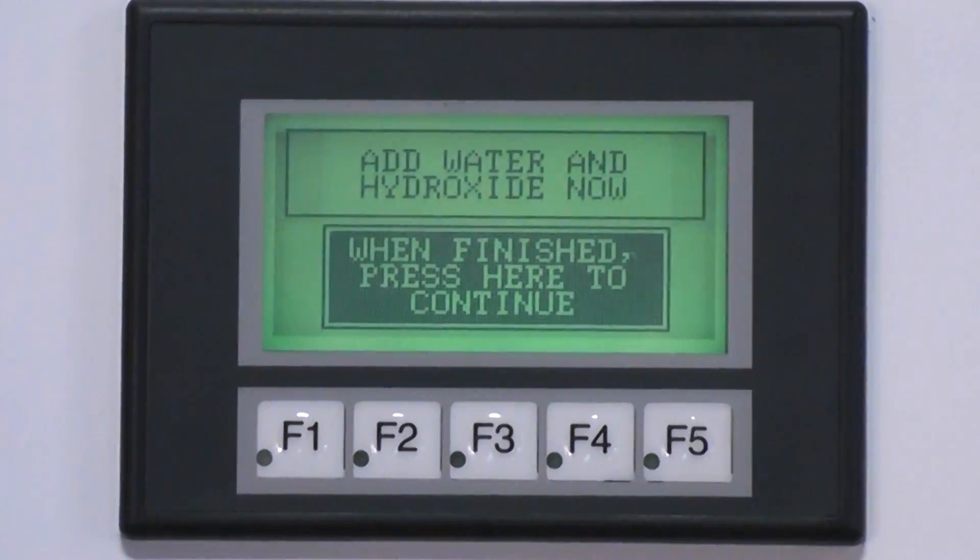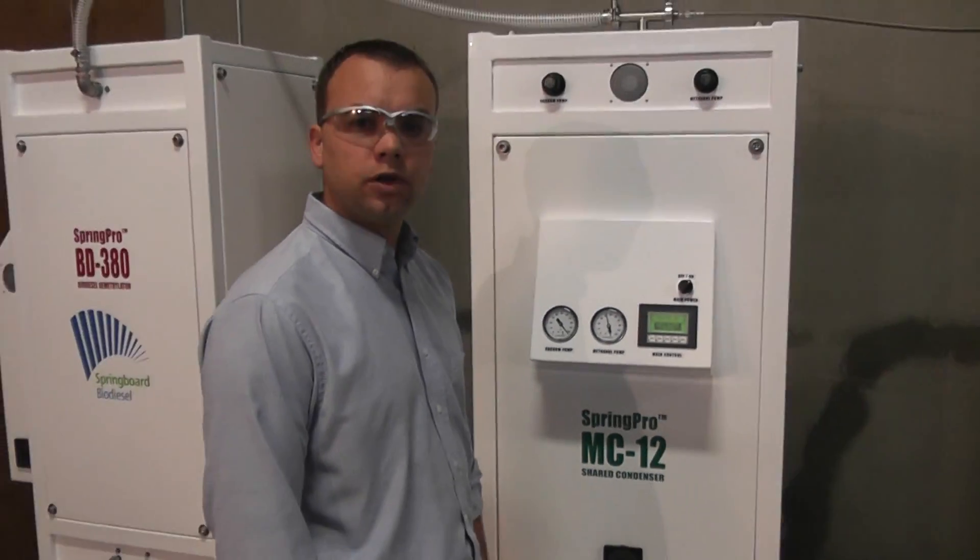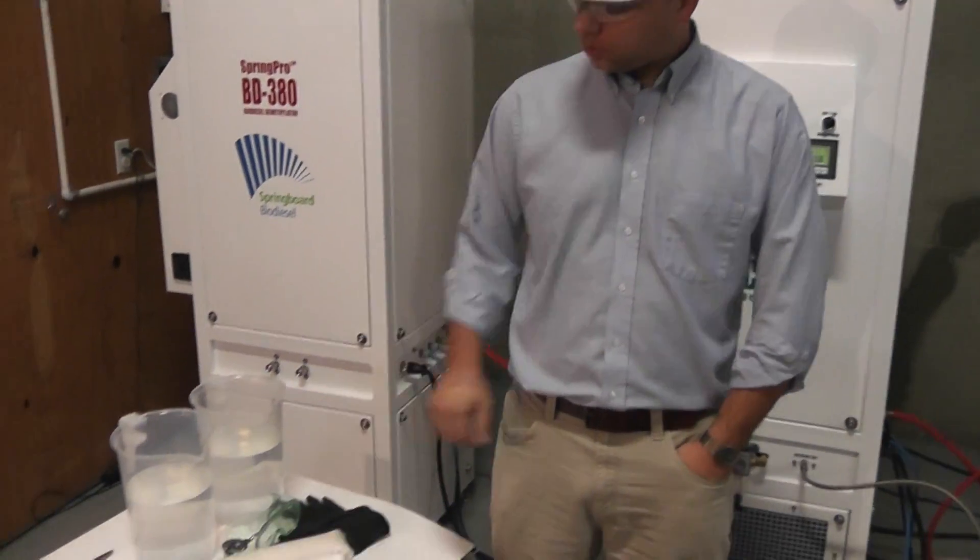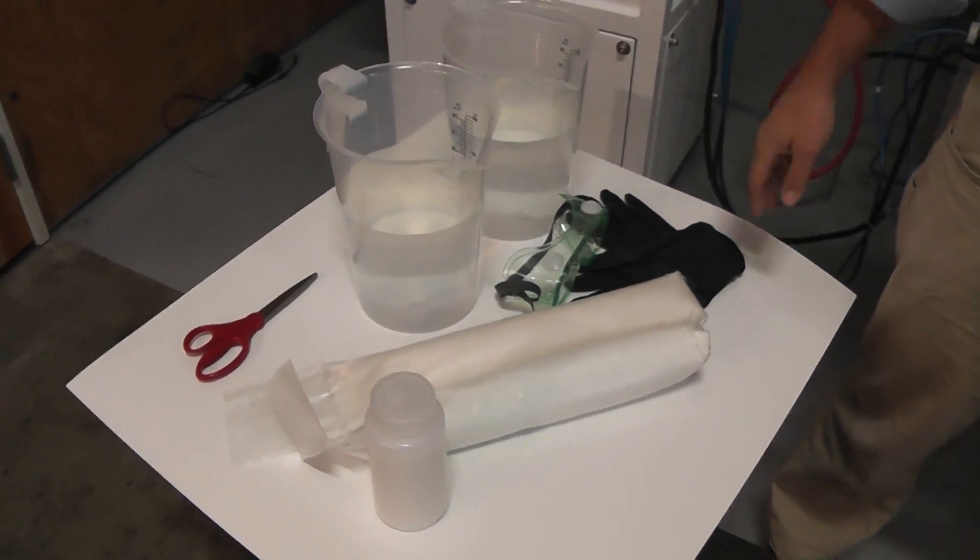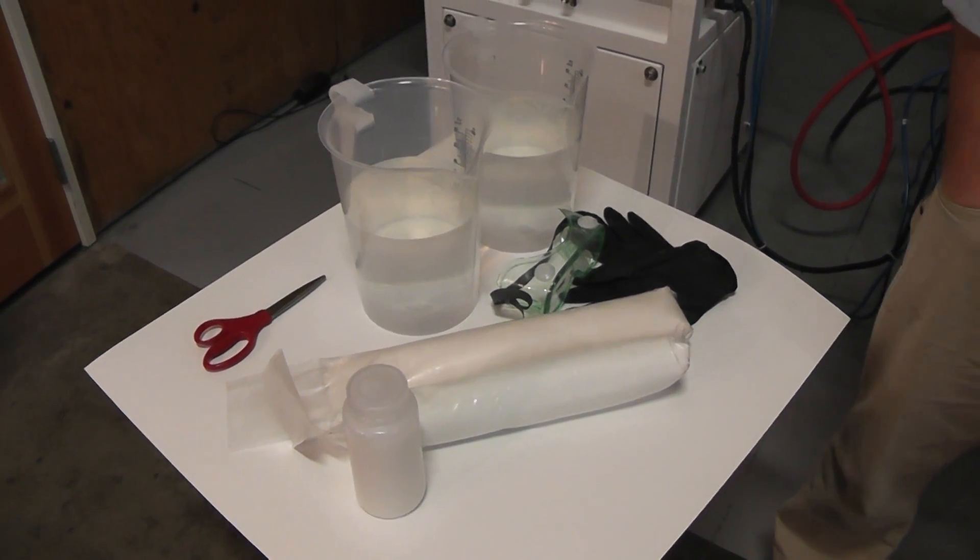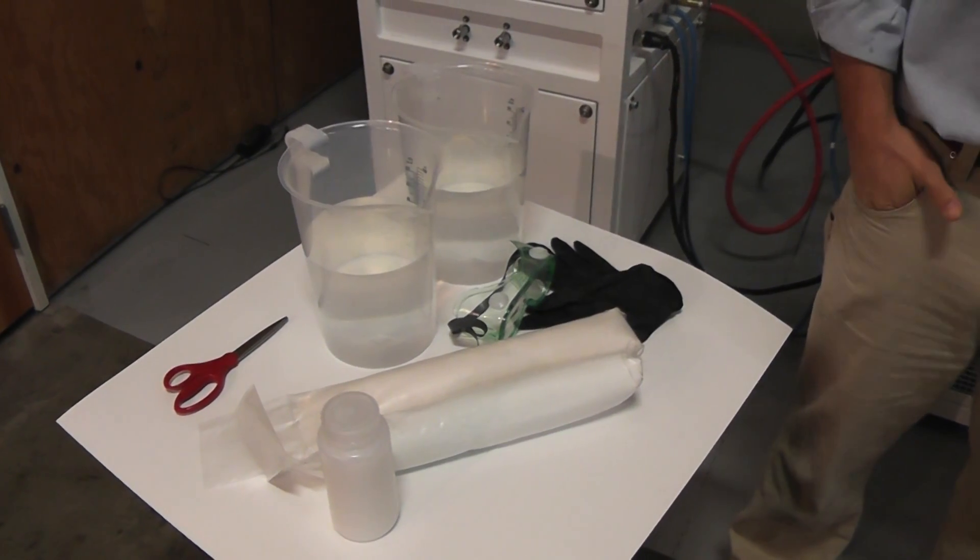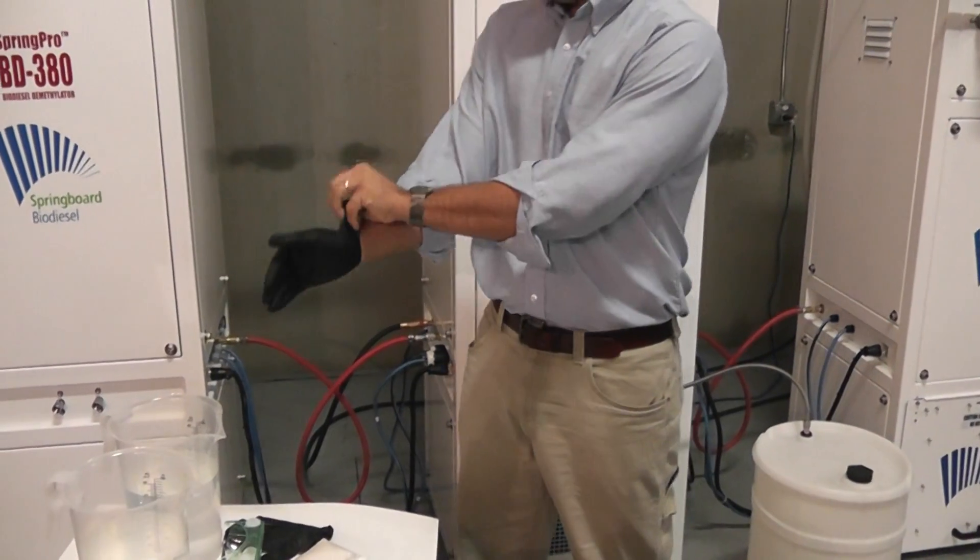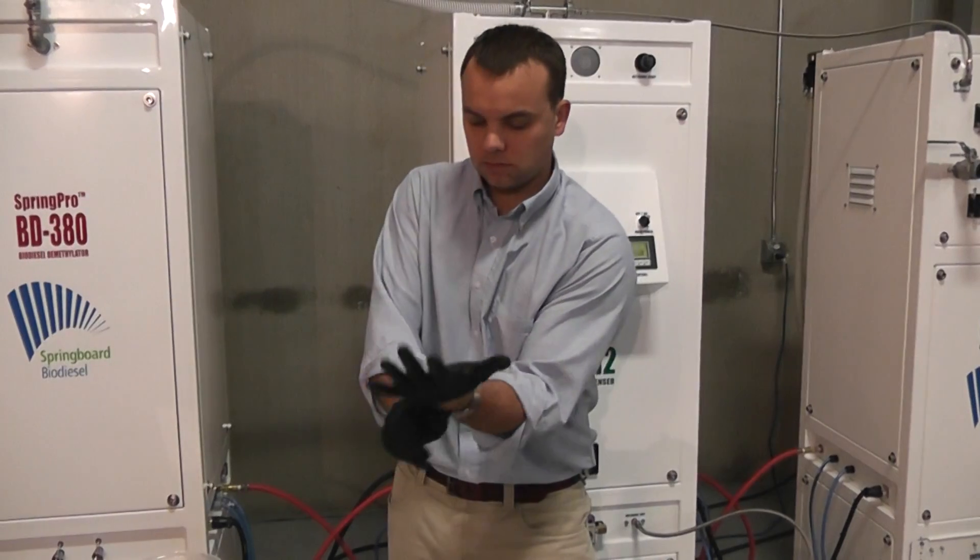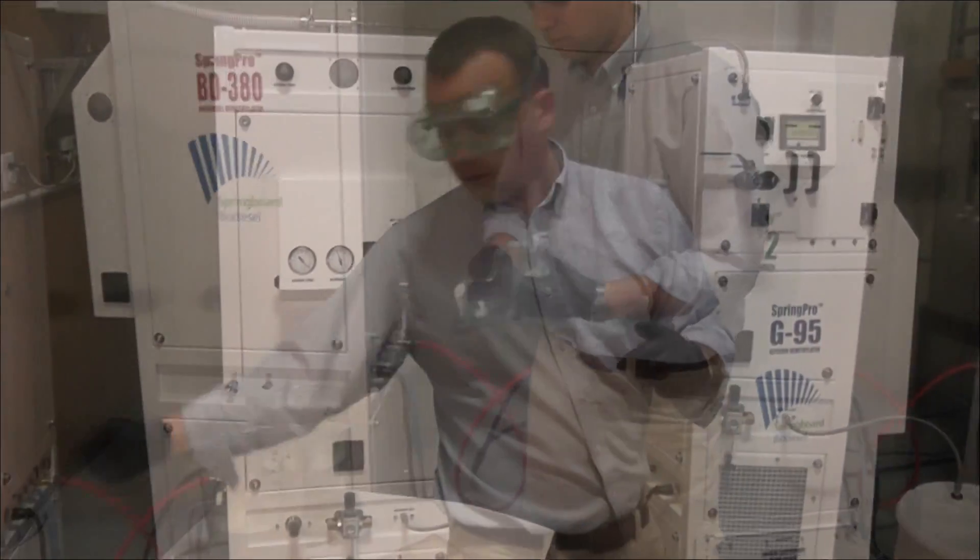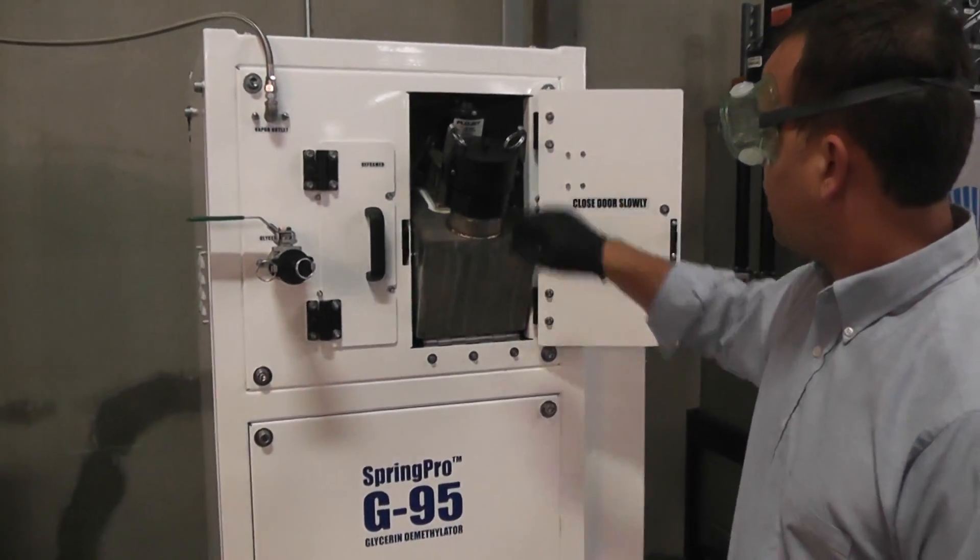Now it wants me to add the water and hydroxide. Since we're doing about a 21 gallon batch of glycerin, that calls for two doses of water and two doses of hydroxide. We've got about three kilograms of sodium hydroxide and six liters of water. Before I put that in, I'm going to put on some goggles and gloves to protect my eyes and hands because this is extremely caustic. The lye and water go into this door right here.